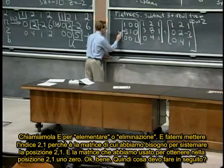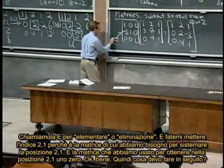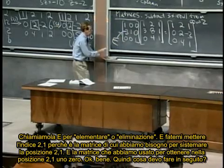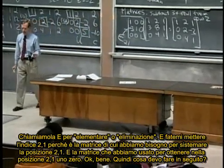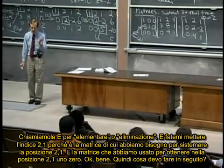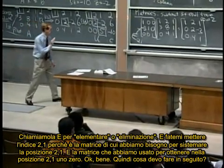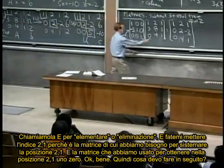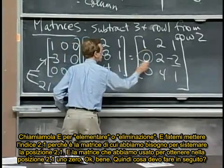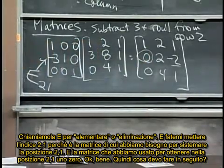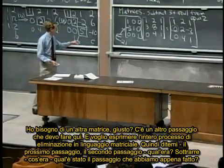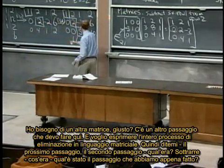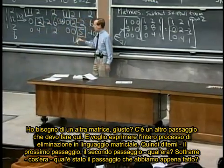So this guy is our elementary matrix. Let's, let's call it E for elementary or elimination. And let me put the indexes two, one, because it's the matrix that we needed to fix the two, one position. It's the, it's the matrix that we needed to get this two, one position to be zero. OK, good enough. So what do I do next? Next, I need another matrix, right? I need to, I, I, I, there's, there's another step here. And I want to.